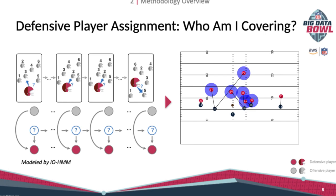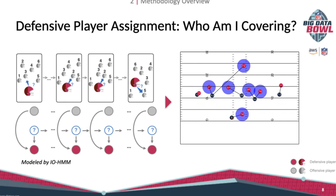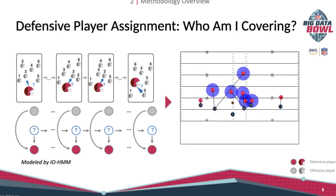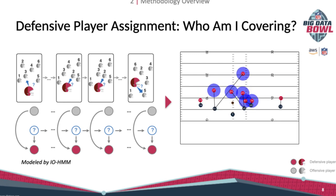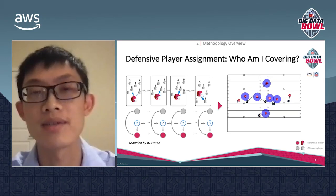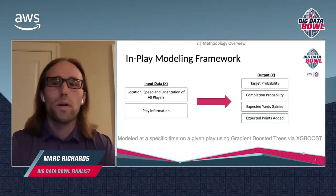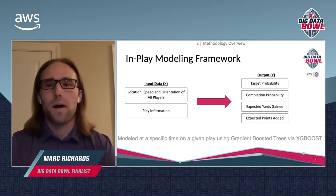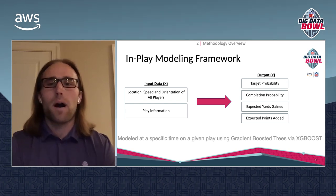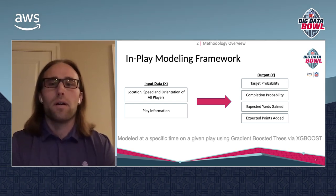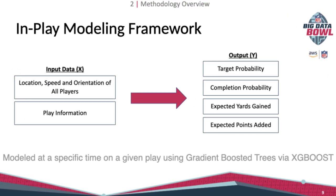Here is a sample play. The black line is the defensive assignment identified by our model. You can see how it changes as the play evolves for some zone coverage players. Now that we've identified who a defender is responsible for at each frame of a play, we implemented an in-play modeling framework, borrowed in part from Burke, Yurko, and Evans, among others, to evaluate a play.